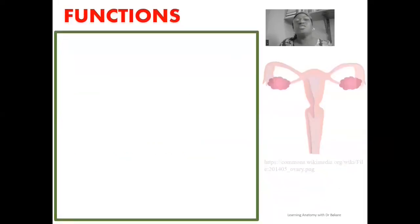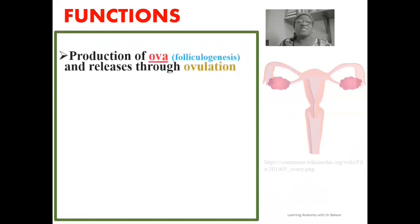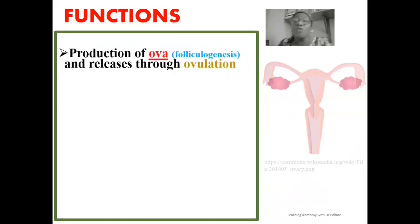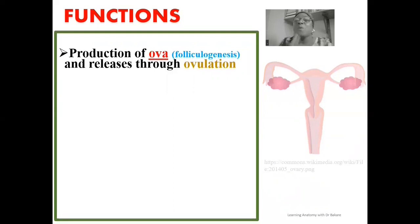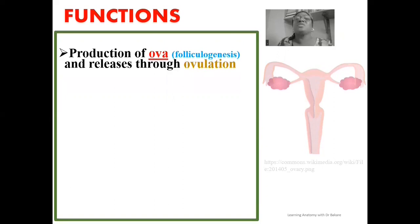The ovary is responsible for the production of ova, and this production occurs through the process of folliculogenesis. Folliculogenesis is the process whereby the ovarian follicle begins to grow and develop into the mature Graafian stage. After folliculogenesis and maturation of the ovarian follicle reaches the mature stage, the process of ovulation will be initiated.